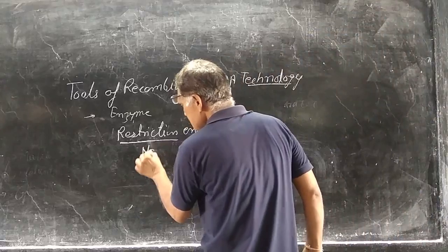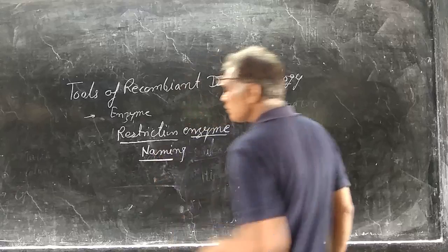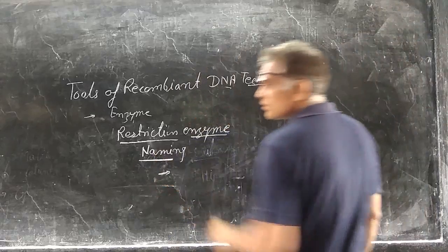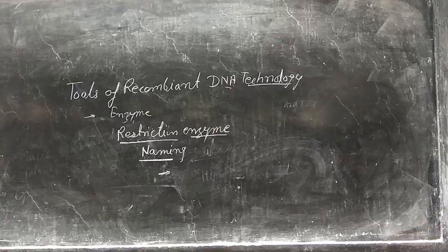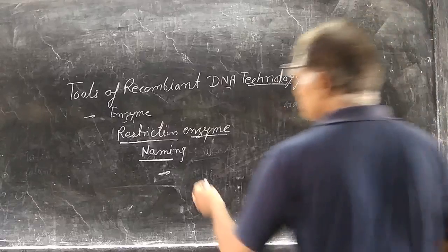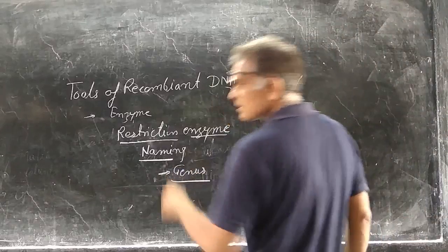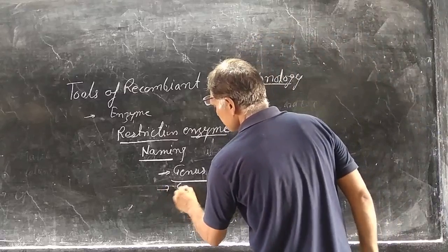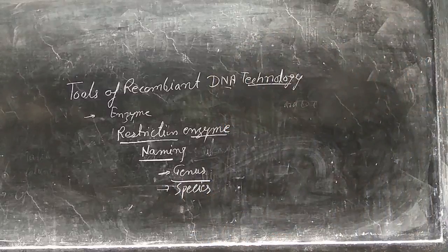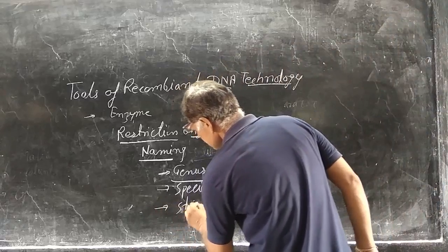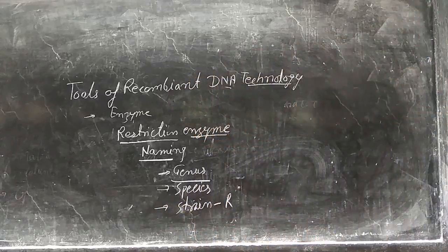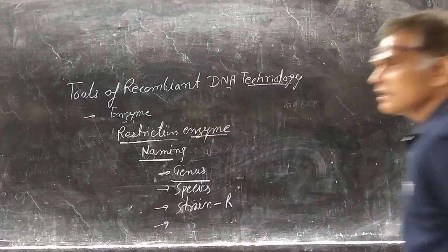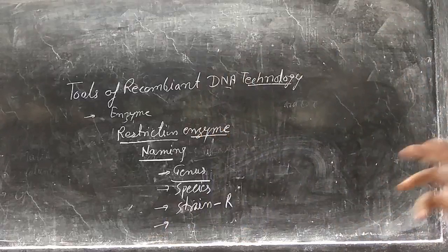The naming of restriction enzymes follows this sequence: the first word is obtained from the genus of the particular organism from which the restriction enzyme is isolated. The second word is the species. The third word is the strain — resistant strain, sensitive strain, or any type of strain. The fourth is the number of the restriction enzyme obtained from that particular organism.